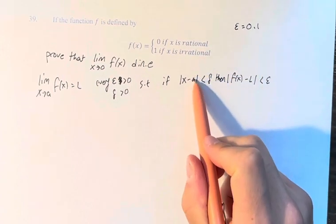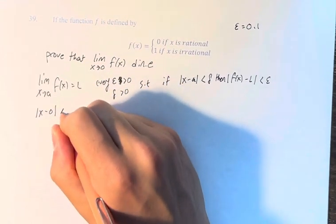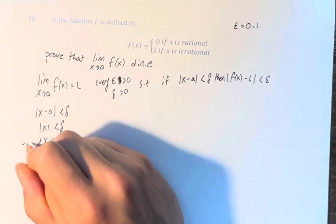So a is the value which x is approaching, so that's 0, so the absolute value of x minus 0 is less than delta. The absolute value of x is less than delta, and therefore x is less than delta and greater than negative delta.